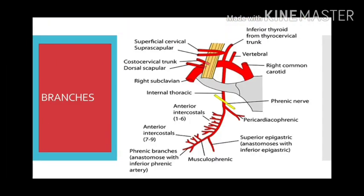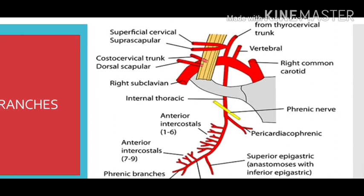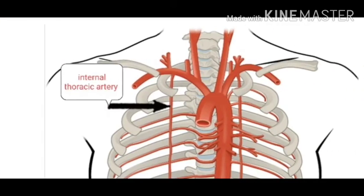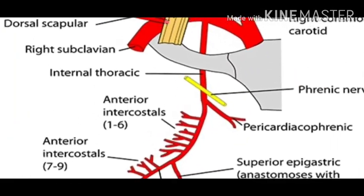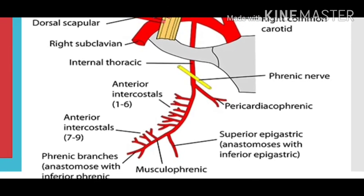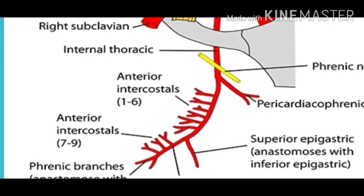The branches of the internal thoracic artery are as follows. First, it gives the pericardiophrenic artery, which arises in the root of the neck, accompanies the phrenic nerve to reach the diaphragm, and supplies the pericardium and pleura. Second, the mediastinal arteries are small irregular branches that supply the thymus and the fat in front of the pericardium. Third, two anterior intercostal arteries are given to each of the upper six intercostal spaces.